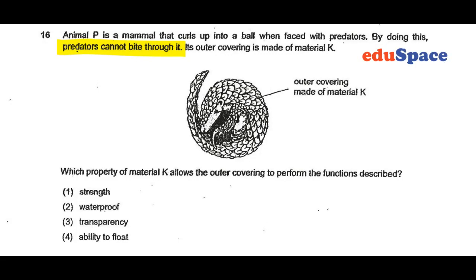Question 16: Animal pee is a mammal that curls up into a ball when faced with predators. By doing this, predators cannot bite through it. So that must mean this material K must be very, very strong, such that the teeth of the predators are not able to bite through it.